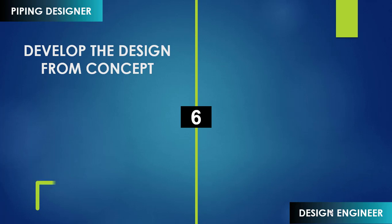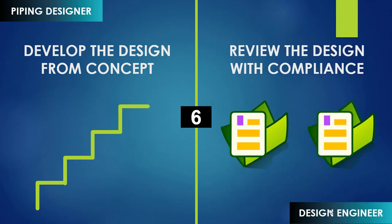Designers are highly good at developing projects from the conceptual stage because they are able to make multiple options very quickly. That helps the design engineer to conclude his options — otherwise, the design engineer would have to prepare a conceptual design himself. So designers are actually helping design engineers make decisions. The design engineer's role is to review the designs prepared by designers to ensure they comply with all requirements — such as safety requirements, operational requirements, project requirements, or client-specific requirements.